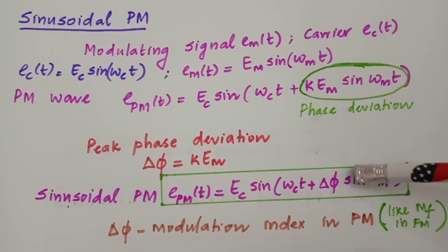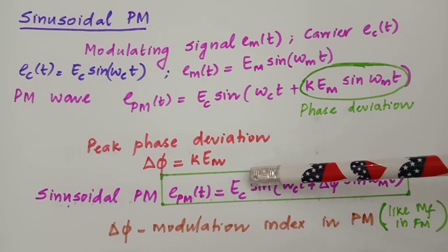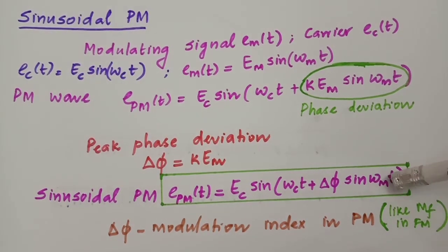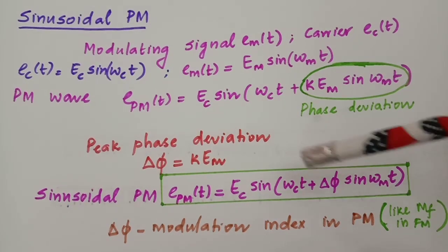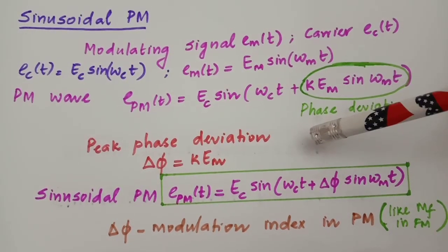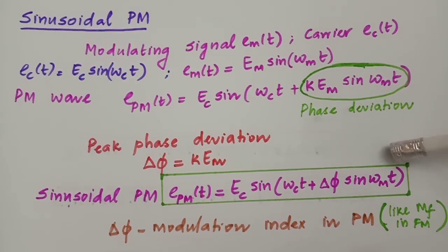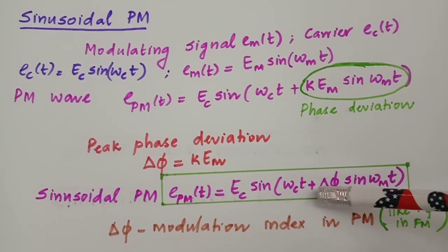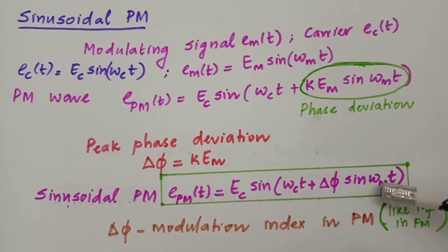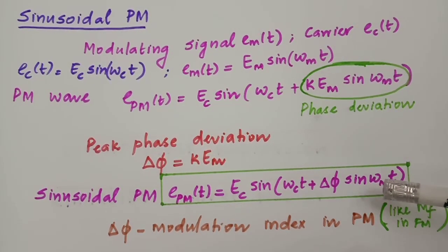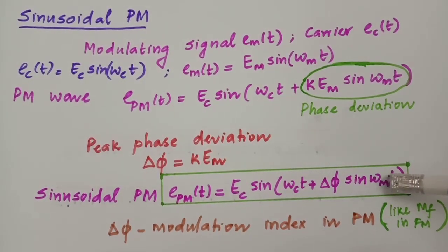We may have a doubt about what frequency components are present in a phase modulated wave. In AM we have just two sidebands and a carrier, but in FM we have a sine-of-sine function that cannot be simplified directly. Using Bessel's function, we find that there are a number of upper and lower sidebands. Since the PM expression is also a sine-of-sine function, the same Bessel's function approach applies. The details of Bessel's coefficients were covered in the last lecture on frequency modulation, and the same explanation holds for phase modulation.